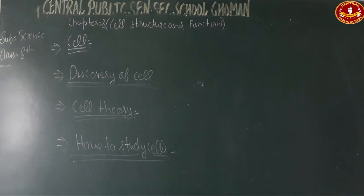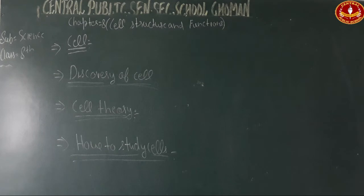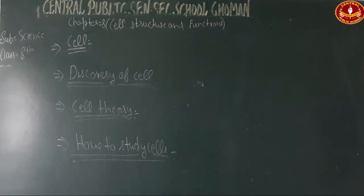When were cells discovered? Cells are so tiny that they cannot be seen with the naked eye. We cannot see them directly. Because they are very small, the discovery of cells is linked to the invention of the microscope — a device that allows us to see very small things.